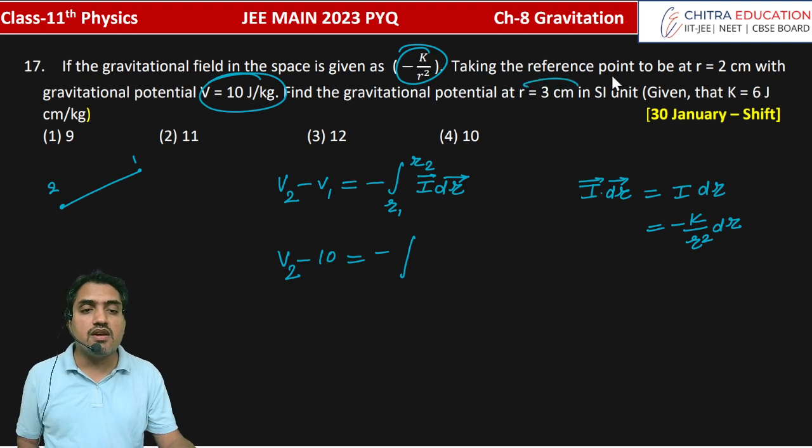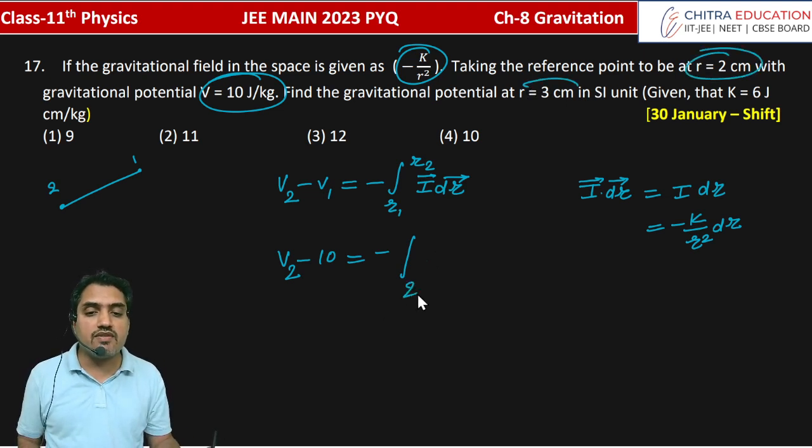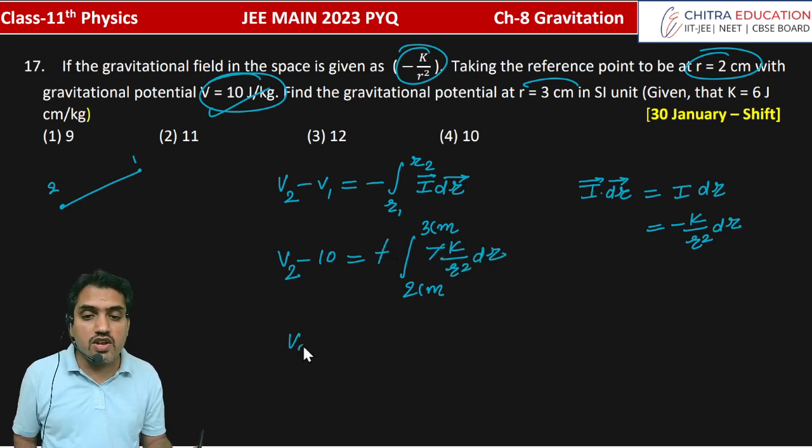R1, the value here is 2 cm, to R2, 3 cm. Minus K divided by R square into dr. So V2 minus 10 equals K times integration of 1 by R square.